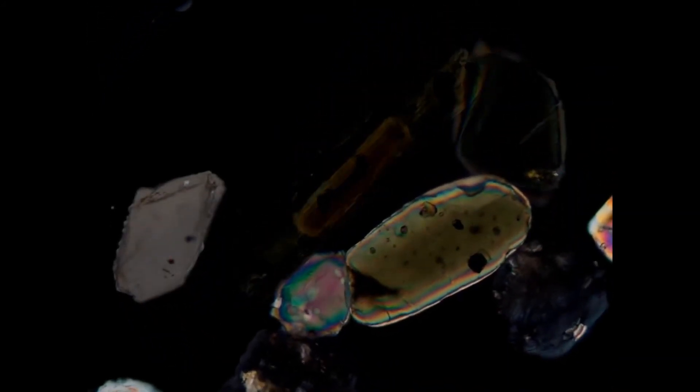The prismatic shape in combination with a large extinction angle point towards a clinopyroxene. And because of the strong green color, one would probably call this an augitic clinopyroxene. Welcome to the Muirr.